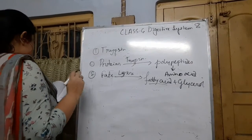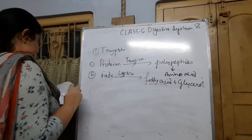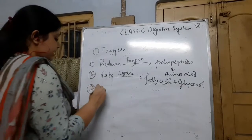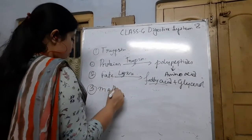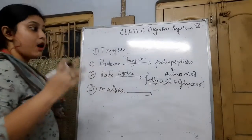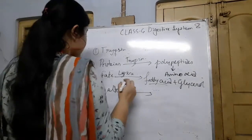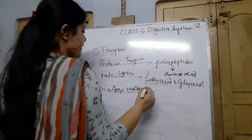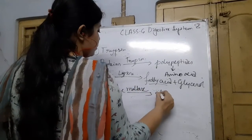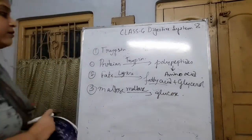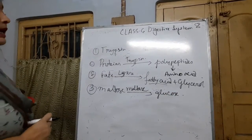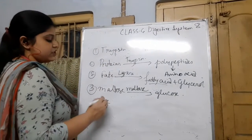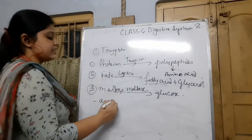The next reaction is on carbohydrates. The maltase enzyme is present in the small intestine and acts on maltose — which was formed in the mouth — and converts it into glucose. Note that any enzyme name ending in '-ase' indicates it is an enzyme.